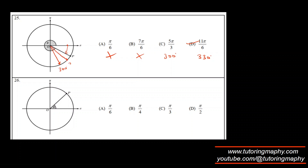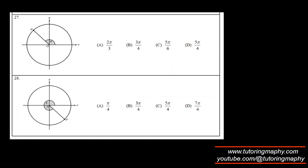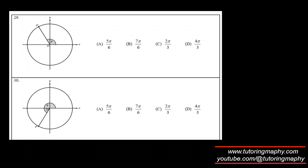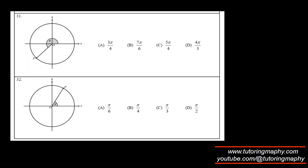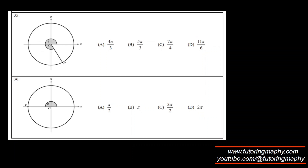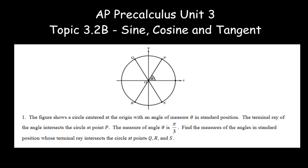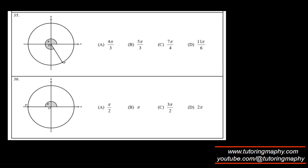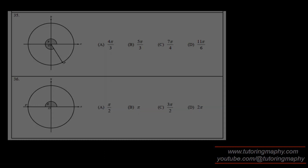This one is clearly 3π/2, so that's option D. It's pretty straightforward here. I think that's about it — if you need any help with those questions just let me know, but I'm pretty sure you can get that.